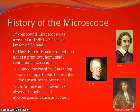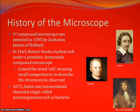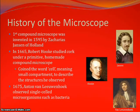Let's start off with some basic history of the microscope. The first compound microscope was invented in 1595 by Zacharias Janssen of Holland. In 1665, Robert Hooke studied cork under a primitive homemade compound microscope. He coined the word 'cell' from Latin roots, meaning 'small compartment,' to describe the structures he observed. In 1675, Anton van Leeuwenhoek observed single-celled microorganisms such as bacteria.